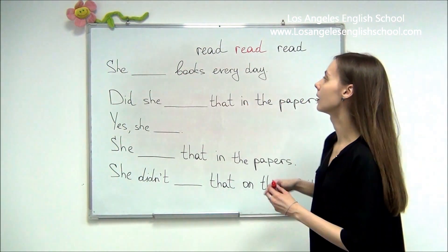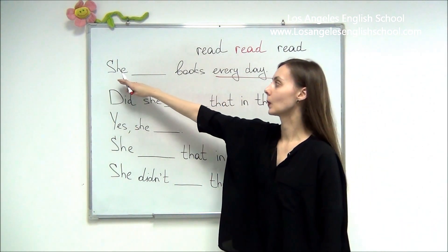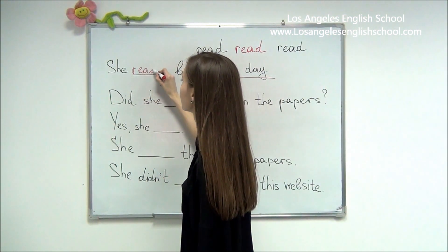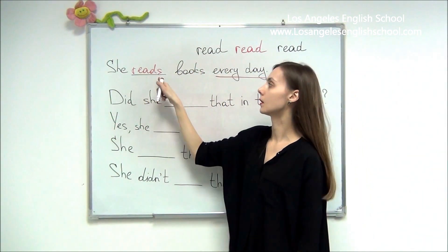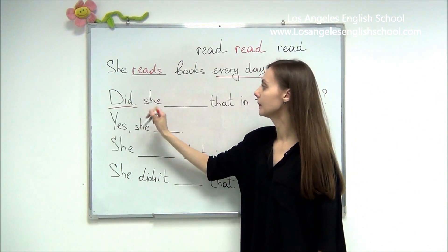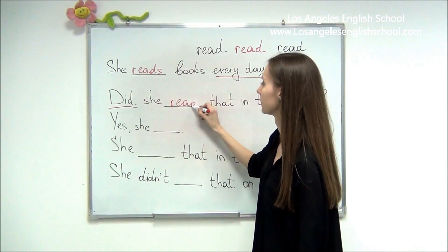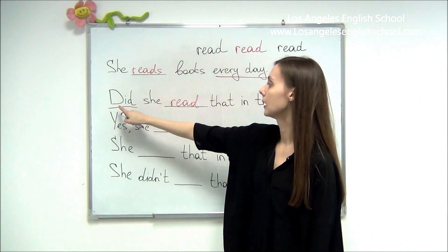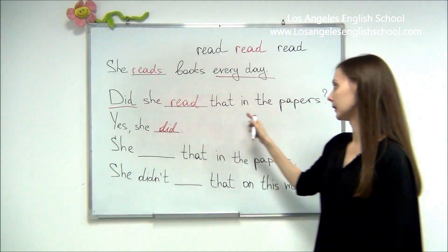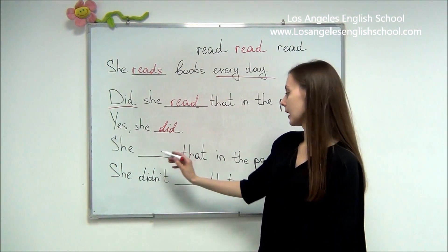Let's practice in sentences. First: 'She reads books every day.' Here we have 'every day,' which tells us this is present simple. Since we have 'she,' don't forget to add 's' — she reads, he reads, it reads. Now for past simple — we have 'did,' so we use past simple. 'Did she read that in the papers?' Don't forget to pronounce it correctly as 'read' because we have 'did.' 'Did she read that in the papers? Yes, she did.' And the full positive statement: 'She read that in the papers.'